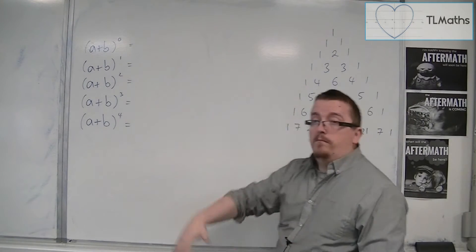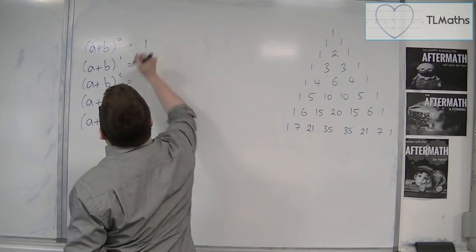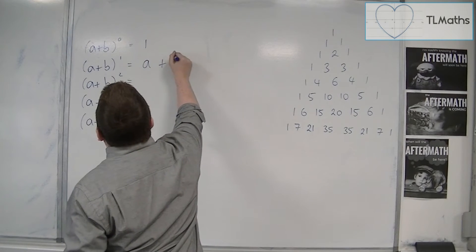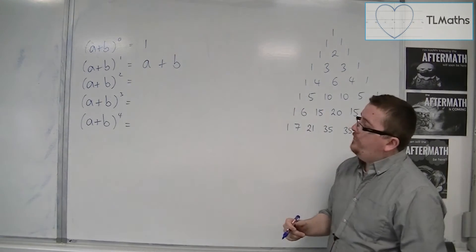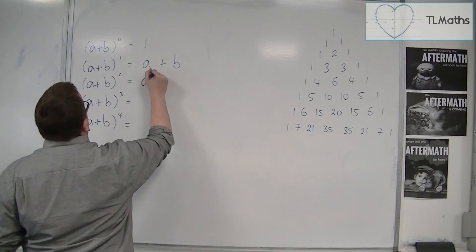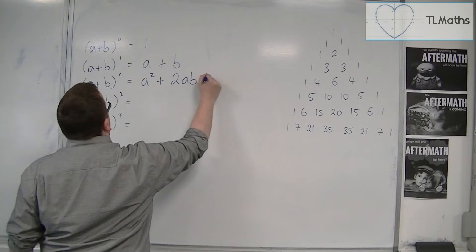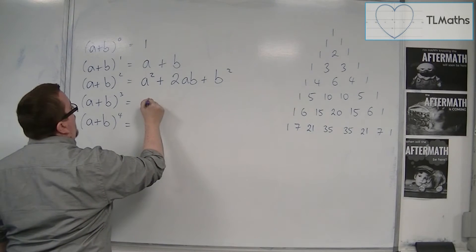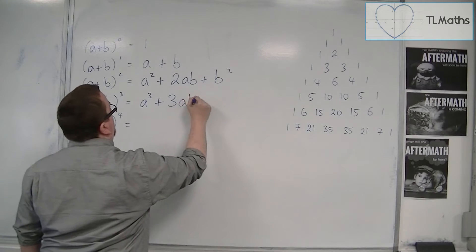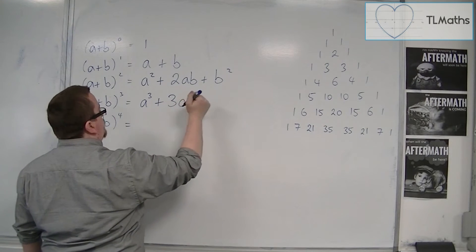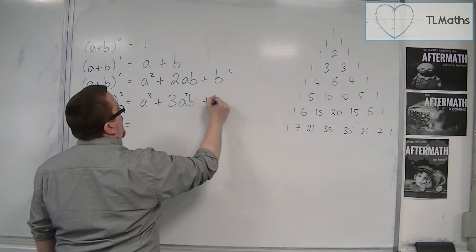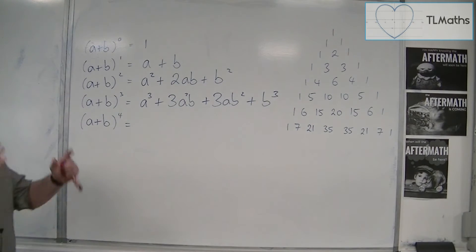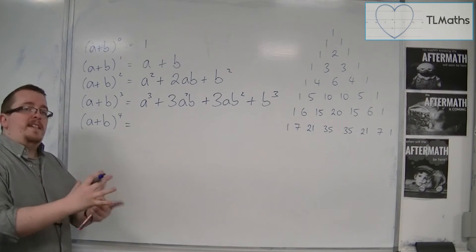So a plus b to the power of 0 is just 1 — anything to the power of 0 is just 1. a plus b to the power of 1 is just a plus b; it remains exactly the same. a plus b squared is a squared plus 2ab plus b squared. a plus b cubed is a cubed plus 3a squared b plus 3ab squared plus b cubed.